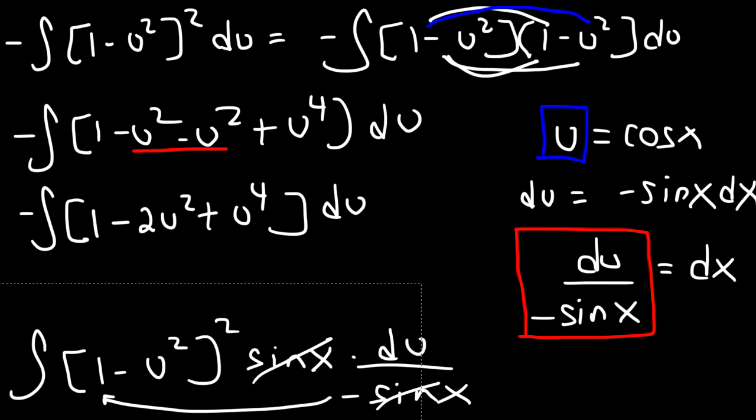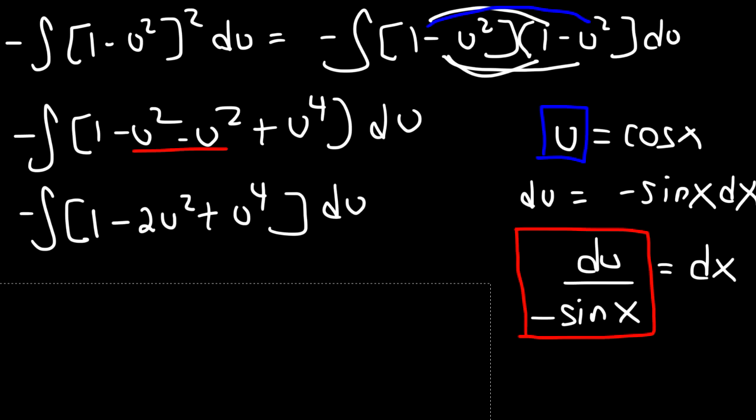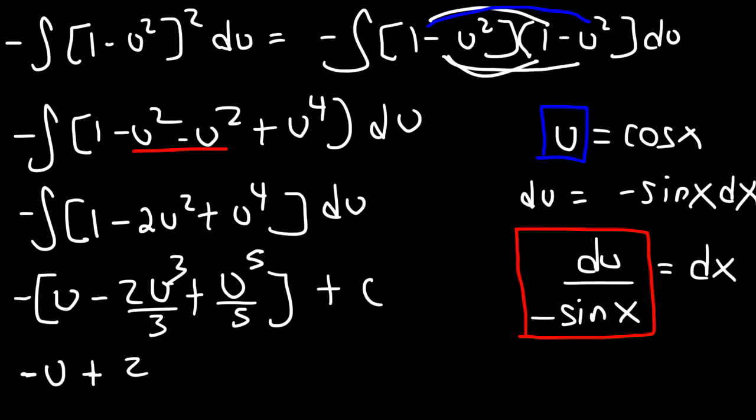So now we can find the antiderivative of each term in that polynomial. So the antiderivative of 1 is u. The antiderivative of u^2 is u^3/3. And for u^4, it's going to be u^5/5 plus the constant c. Now let's distribute the negative sign. So it's -u + (2/3)u^3 - u^5/5 + c.